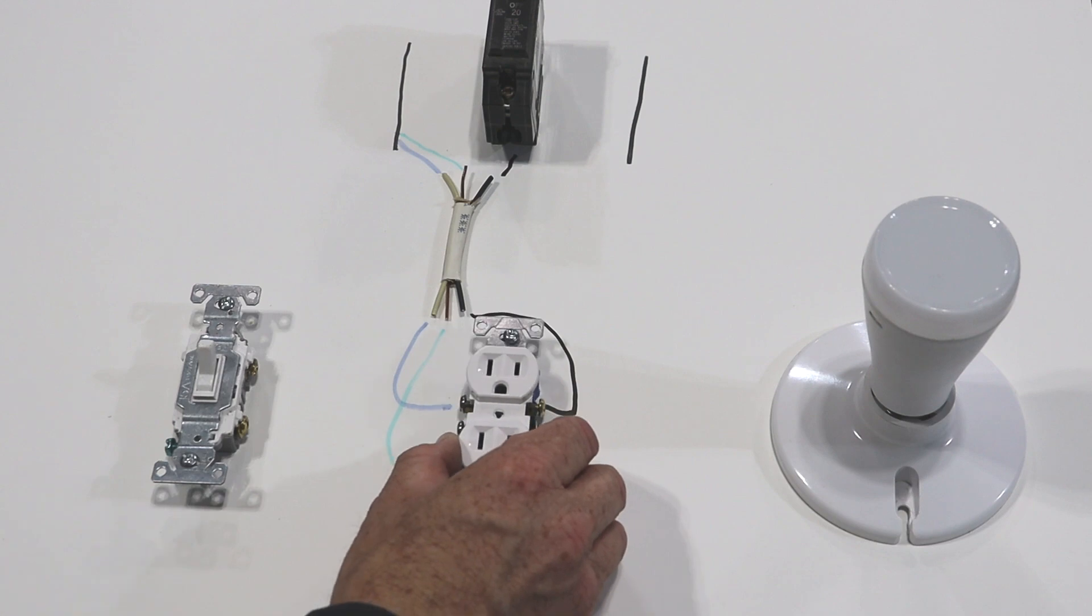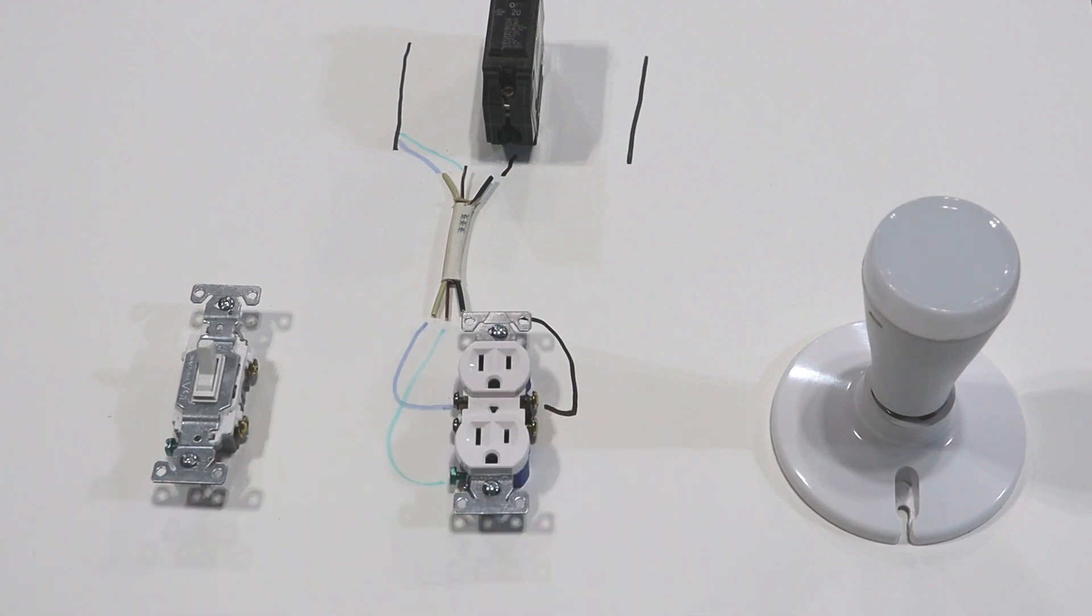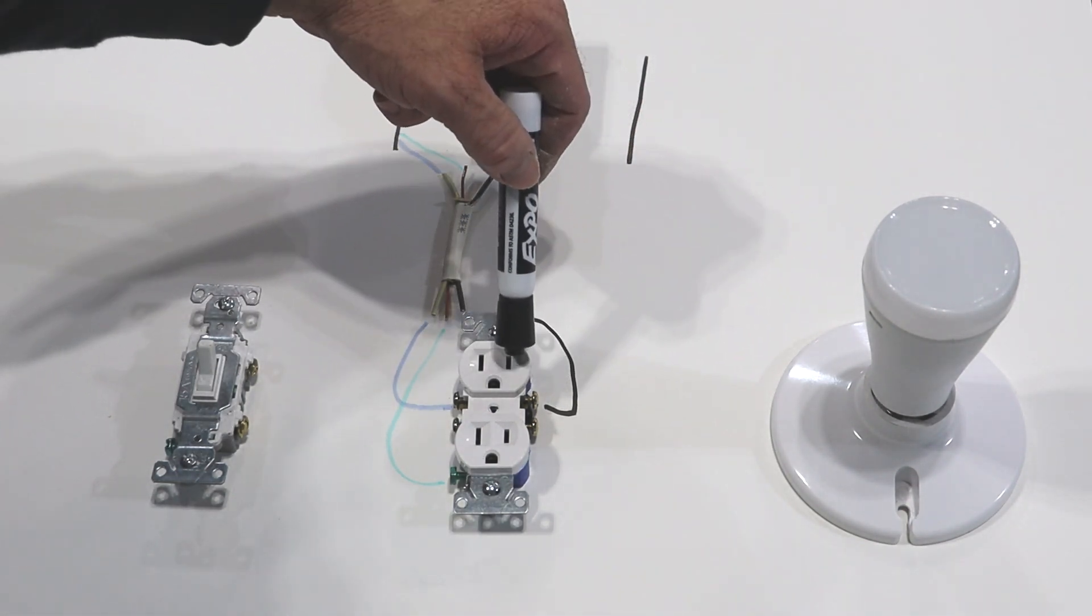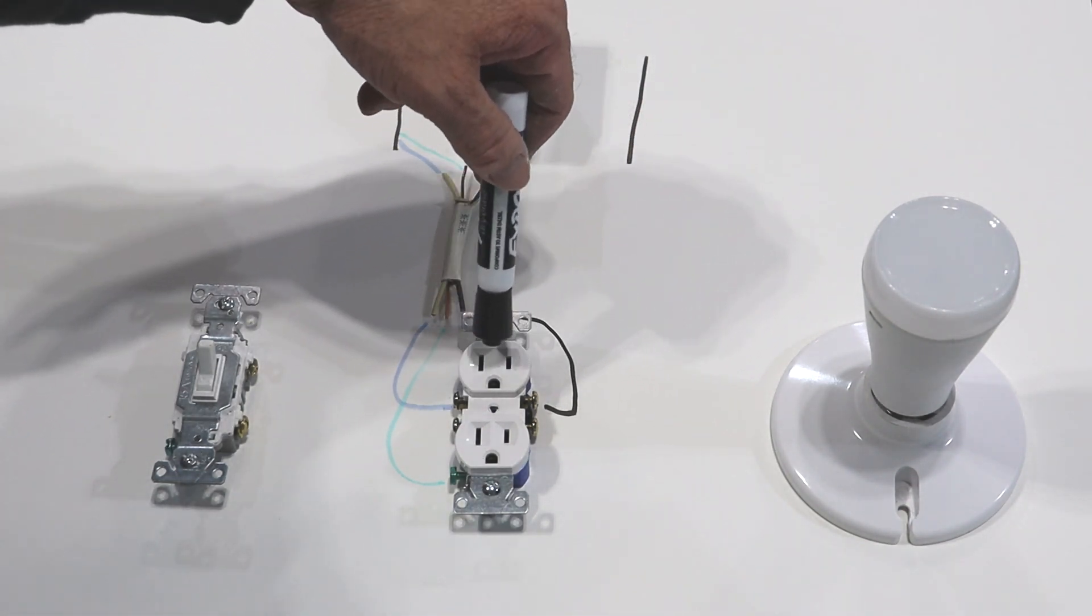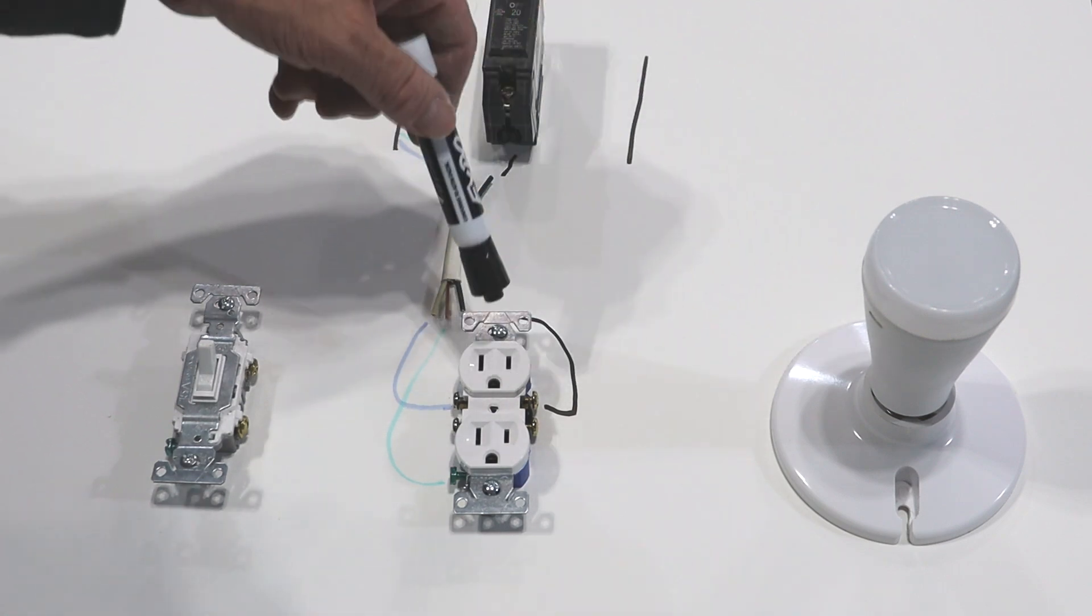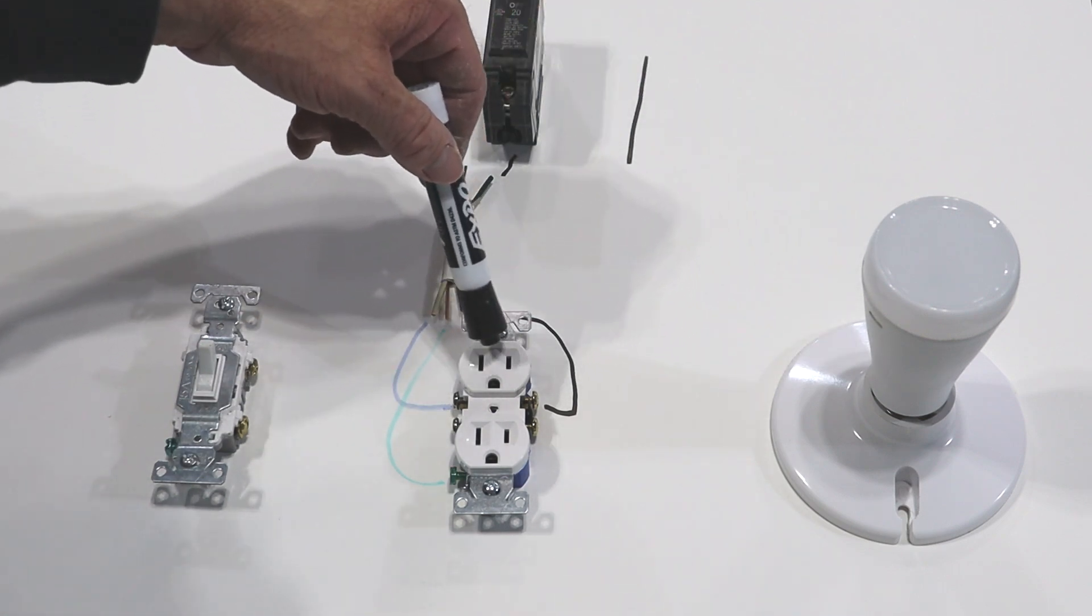Let's go ahead and break that brass bridge. So now what we have is we have power coming into the gold screw. It's not connected right now because there's no device plugged into the outlet. So it's not powering anything. So technically the circuit is broken.